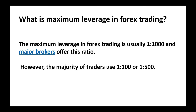What is the maximum leverage in forex trading? The maximum leverage in forex trading is usually 1 to 1,000, and major brokers offer this ratio. However, the majority of traders use 1 to 100 and 1 to 500. You need to understand that leverage is only buying power — it's nothing more. In your account, nothing will change. But only when you have a large leverage can you open large positions. It is just the ability to open large positions.